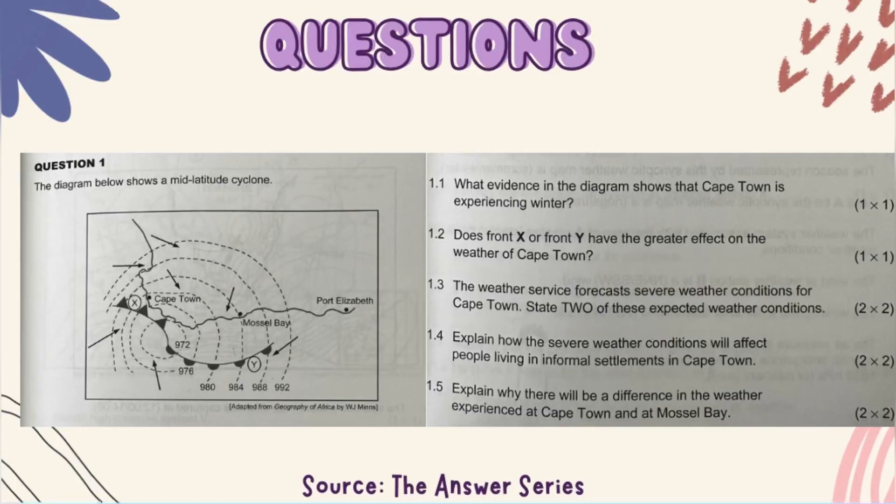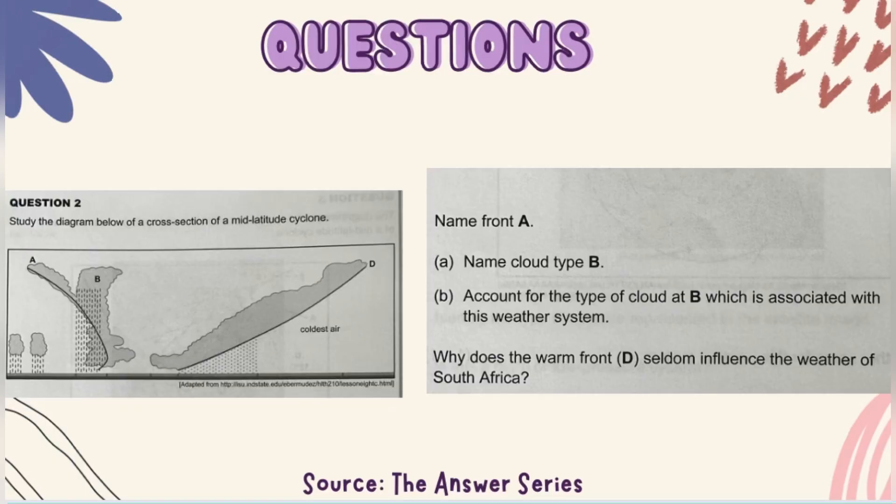Next question: Study the diagram below, cross-section of a mid-latitude cyclone. Name front A. Front A is a cold front. How do we know that it is a cold front? Because of B. B is a cumulonimbus cloud. Because of the presence of the cumulonimbus clouds and the heavy rainfall, you obviously know that is a cold front. That's the weather associated with a cold front.